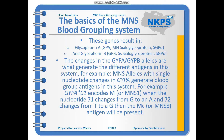These genes result in glycophorin A and glycophorin B. GPA codes for the MN antigens, and GPB codes for the Ss antigens — also known as SGP-alpha and SGP-delta. The changes in GYPA and GYPB alleles are what generate the different antigens in this system. For example, single nucleotide changes in GYPA generate blood group antigens — GYPA*01 will encode M or MNs1, and when nucleotide 71 changes from G to A and 72 from T to G, Mc will be encoded, also known as MNs8.